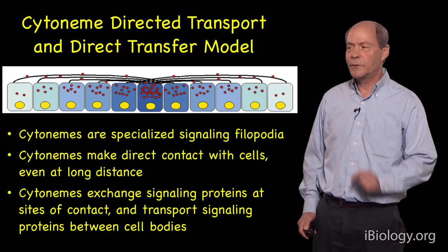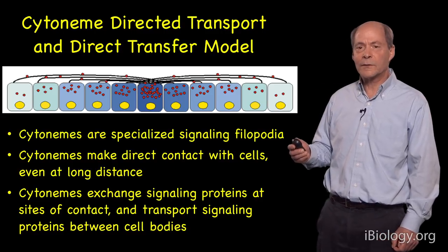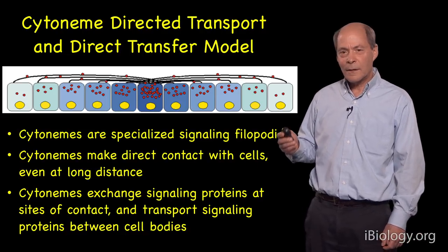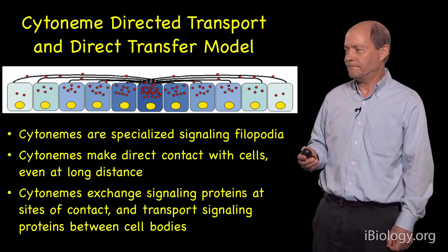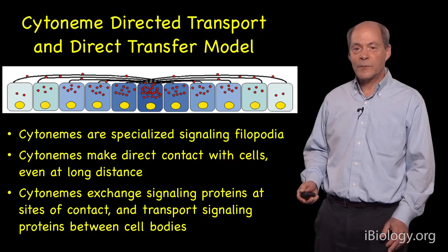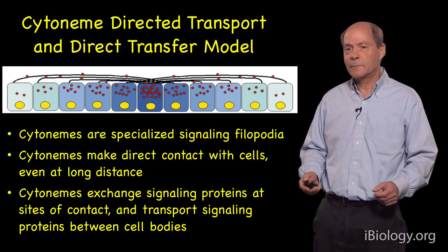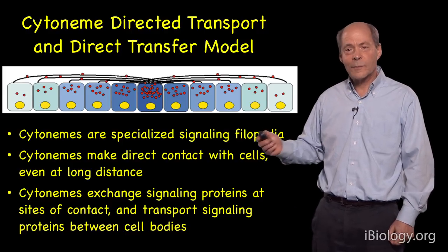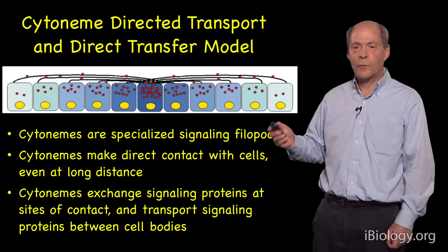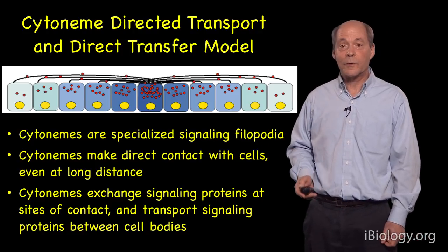I'm going to introduce what we call cytonymes. Cytonymes are a specialized type of filopodia — filopodia made by many types of cells — but this is a special type involved and required for paracrine signaling. I'll show that cytonymes make direct contact with target cells even at a distance, sometimes over 100 microns, and can find their target, make direct contact, and facilitate the exchange of signals. Cytonymes do exchange signaling proteins at these sites of contact and transport them between cells.